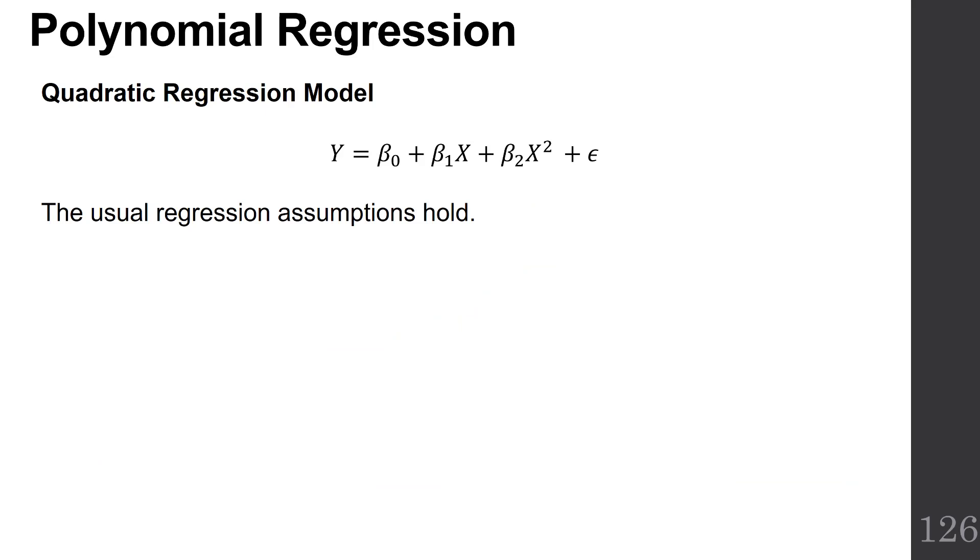Let's introduce the quadratic regression model. The quadratic regression model is a polynomial regression model where you have a squared term. You have Y = β₀ + β₁X + β₂X² plus some error. The usual regression assumptions hold.